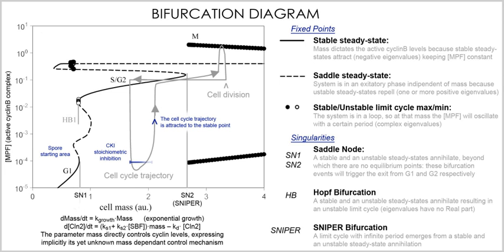Another important branch of population genetics that led to the extensive development of coalescent theory is phylogenetics — an area that deals with the reconstruction and analysis of phylogenetic trees and networks based on inherited characteristics. Traditional population genetic models deal with alleles and genotypes, and are frequently stochastic. Many population genetics models assume that population sizes are constant. Variable population sizes, often in the absence of genetic variation, are treated by the field of population dynamics. Work in this area dates back to the 19th century, and even as far as 1798 when Thomas Malthus formulated the first principle of population dynamics, which later became known as the Malthusian growth model. The Lotka-Volterra predator-prey equations are another famous example.